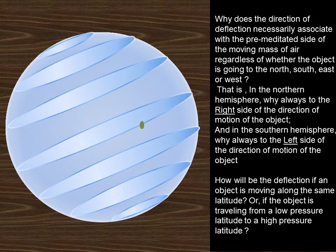Why does the direction of deflection necessarily associate with the premeditated side of the moving mass of air regardless of whether the object is going to the north, south, east or west? That is, in the northern hemisphere, why always to the right side of the direction of motion of the object? And in the southern hemisphere, why always to the left side of the direction of motion of the object?